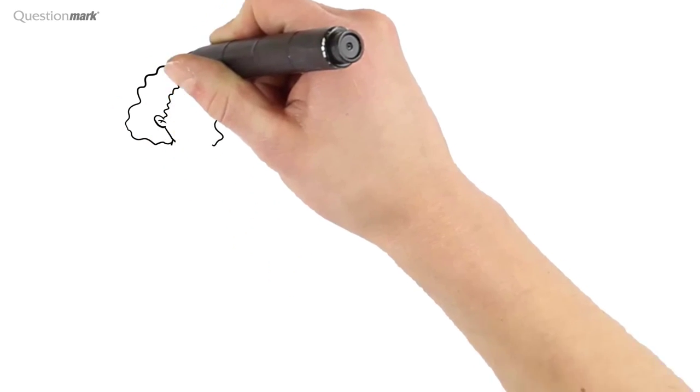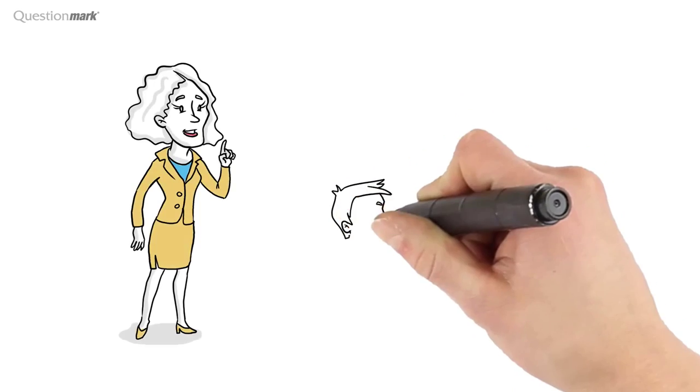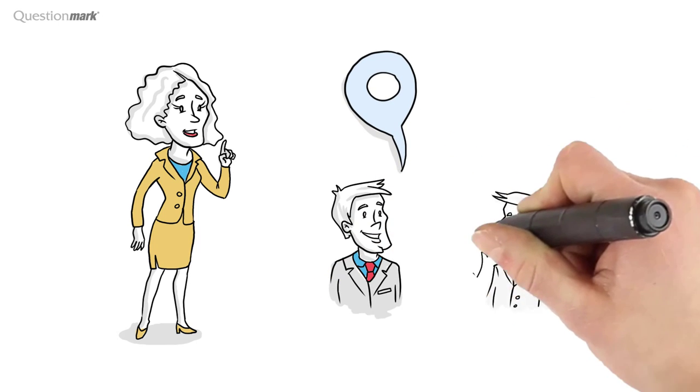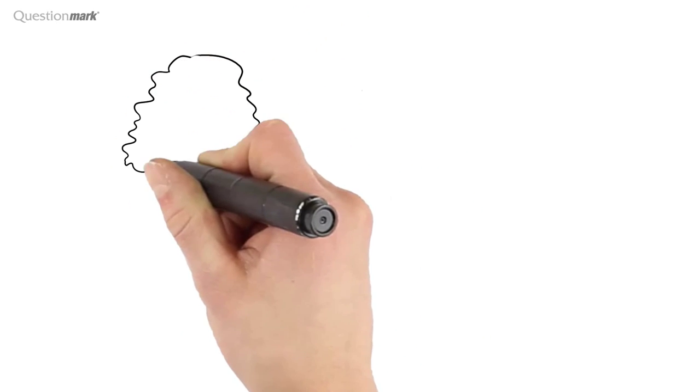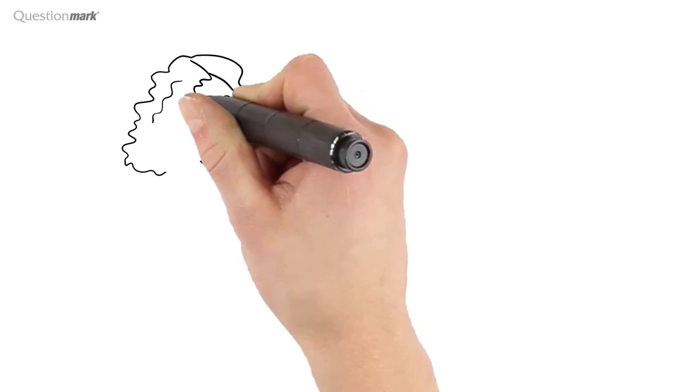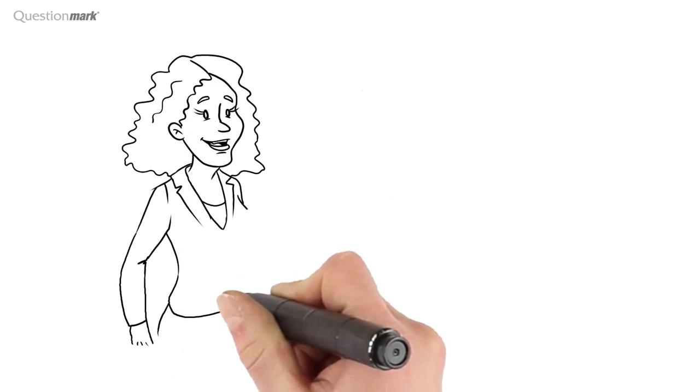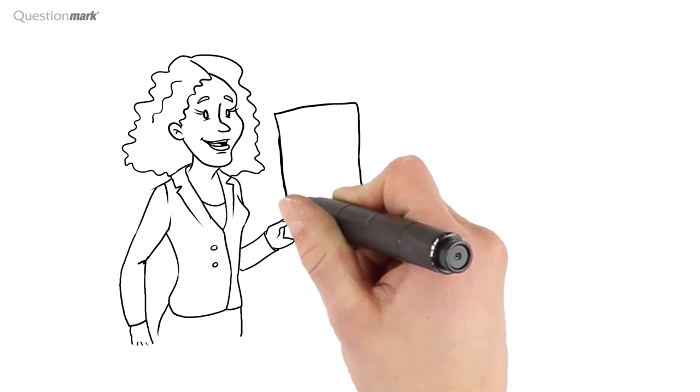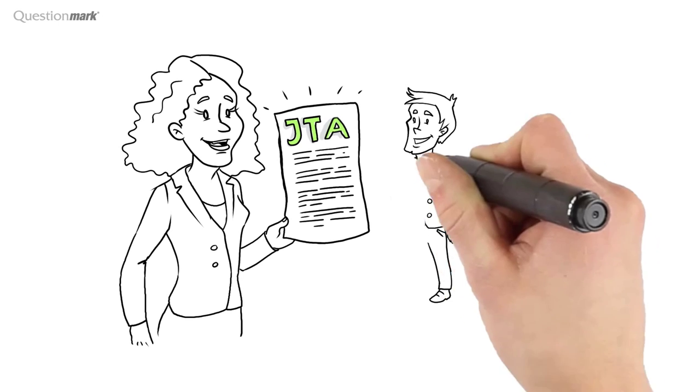Liz needs to discover the tasks that are performed by the team when representing similar products. She also needs to discover how the regulations dictate the way certain tasks of the job are to be performed. First, Liz interviews her stakeholders and a subject matter expert to obtain their views on what a competent customer service agent must know and be able to do. Second, she administers a job tasks analysis or JTA survey to the customer service team.